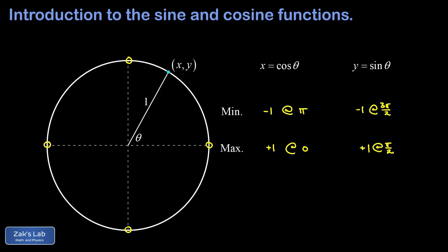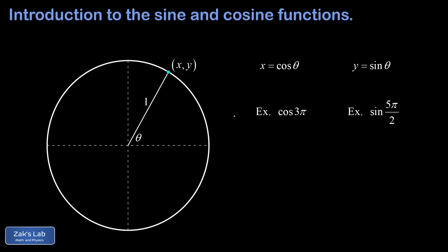Both of these functions are periodic with a period of 2π radians. This means the values will be the same if we add or subtract an integer multiple of 2π from the angle, since that just loops around the circle an integer number of times back to the same point. So each function achieves its minimum and maximum values an infinite number of times, corresponding to multiple added rotations around the circle in either direction.